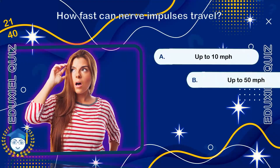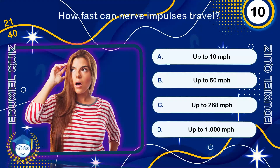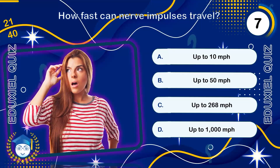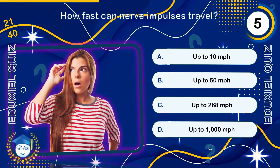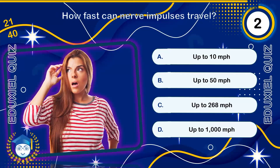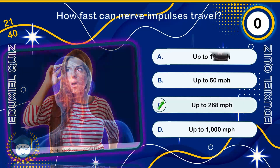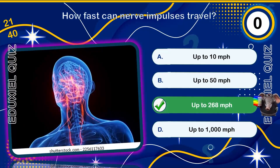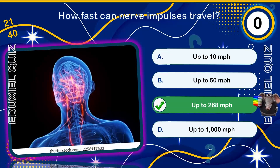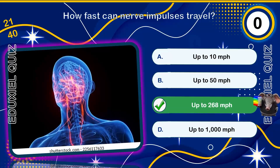How fast can nerve impulses travel? Up to 268 miles per hour. The fastest nerve signals travel at speeds up to 120 meters per second, over 268 miles per hour, allowing for near-instantaneous reactions.